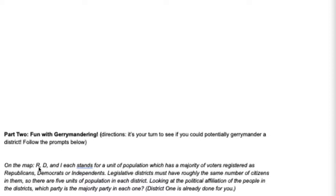On the map, R, D, and I each stands for a unit of population — let's say 10 people — which has a majority of voters registered as Republicans, Democrats, or Independents. Legislative districts must have roughly the same number of citizens in them, so there are five units of population in each district. Looking at the political affiliation of the people in the districts, which party is the majority party in each one?